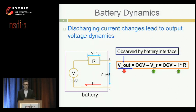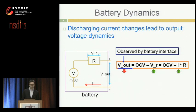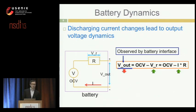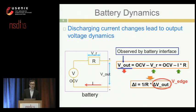If there's a current change on the circuit, it will cause an increased voltage drop on the internal resistor R. Since OCV is relatively constant during a short time period, we can observe a decrease in output voltage from the battery interface. This means there's a relationship between the output voltage drop and the current change on the circuit — a linear transform between current change and voltage change. We represent this voltage change as the V-Edge.